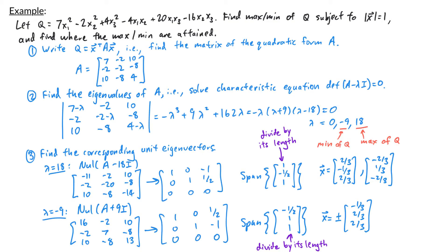So to summarize: the quadratic form q has a maximum of 18, attained at the input vectors plus or minus (2/3, −1/3, 2/3), and the quadratic form q has a minimum of negative 9, attained at plus or minus (−1/3, 2/3, 2/3).